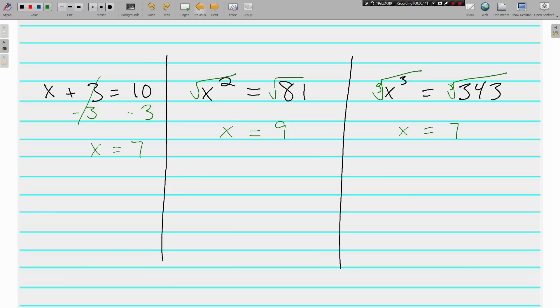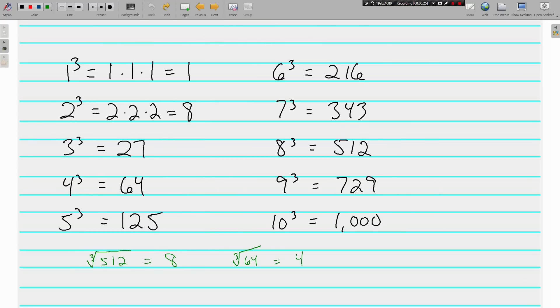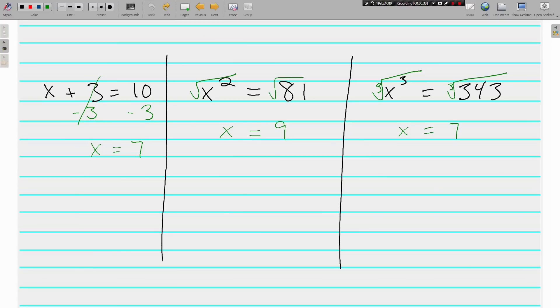All right, so a few things we need to make sure we understand from this video. We need to know the first 15 perfect squares. We need to make sure we know what a radical is and how to write square roots, how to find them. We need to make sure we know the first 10 perfect cubes and what a cubed root looks like. And last, we need to make sure we understand how to solve an equation that either has x squared or x cubed in it. Because we just want x. If you have questions about anything that you've seen today, write them down. Be ready to talk about them in class. See you soon.